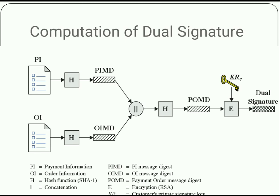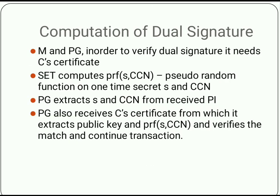This dual signature is passed to the merchant, who passes it to the payment gateway. The merchant checks the OIMD (order information message digest) to verify it, and the payment gateway checks the PIMD (payment information message digest). To verify the dual signature, the merchant and PG need a certificate created by the customer. The certificate format is a pseudo-random function with secret key S and the CCN value. The PG extracts S and CCN from the payment authorization and verifies them using the pseudo-random function.